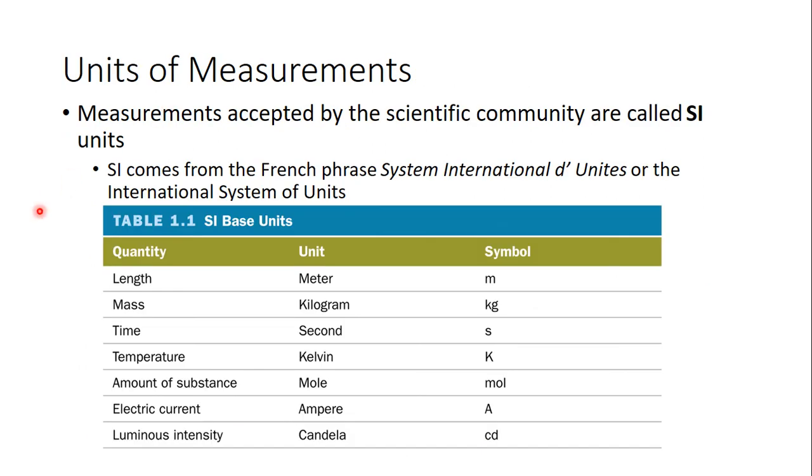Now, in science, we have specific units we use for different quantities. So when we talk about length, we're always talking about the meter. For this, you're going to want to know the quantity, the unit, and the symbol. These symbols are going to pop up a lot in chemistry.